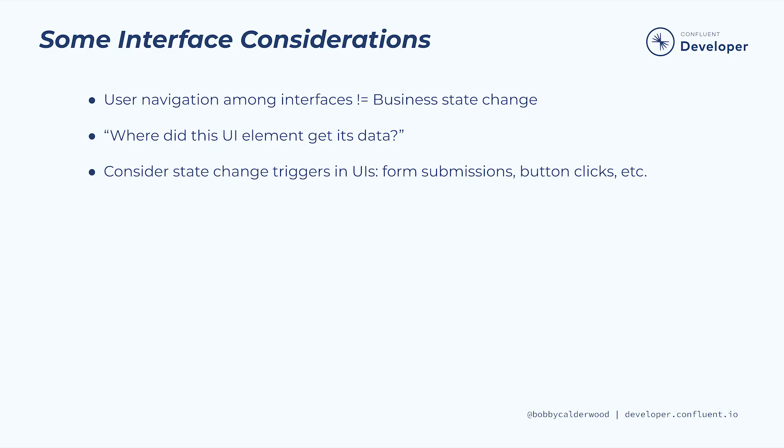First, users navigating among various interfaces doesn't necessarily comprise business state change — we'll make this point explicit in the next workshop step, but it's an important distinction to consider now. Next, we can begin to consider sources of information that populate our interfaces by asking ourselves questions like: where does this UI element get its data, and how do we populate this table?